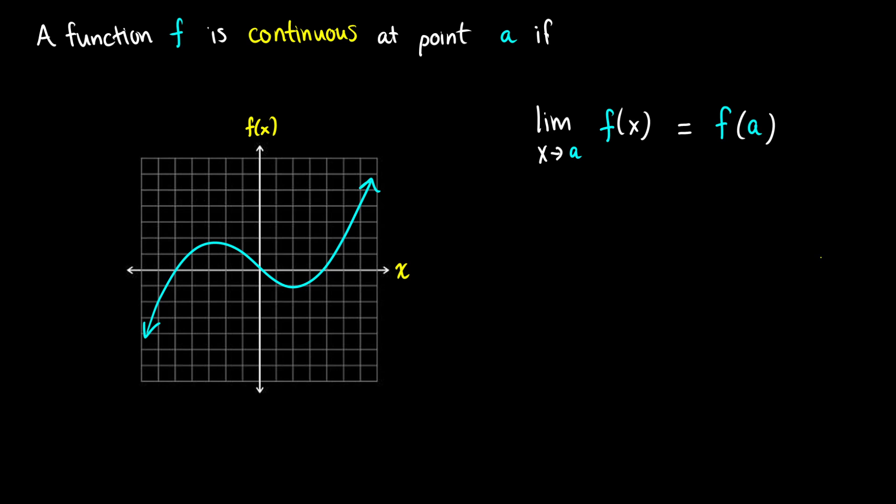What this means is that if we define some point a on our curve and take a point on this curve, as we inch over towards the limit, we find that the limit is the same thing as the point we are approaching — essentially meaning we do not jump off the curve at any point; we can stay on the curve continuously. That is what continuity means on a very intuitive and graphical level.